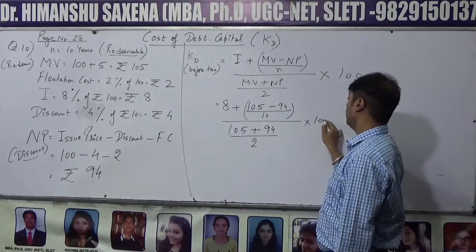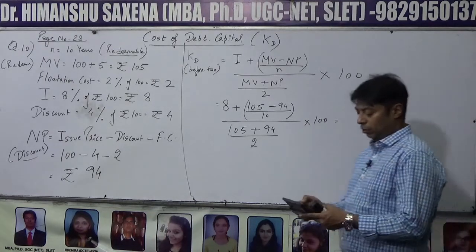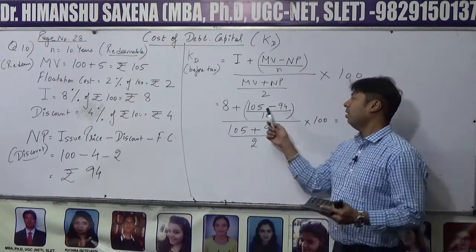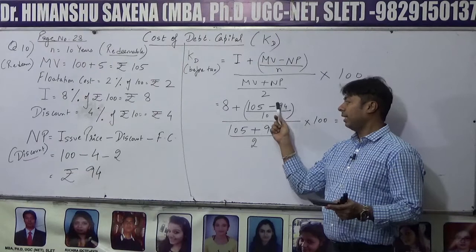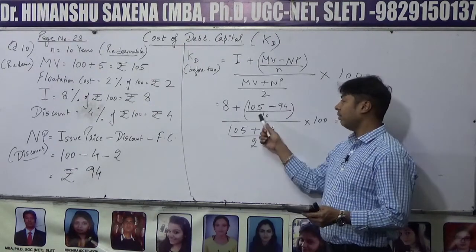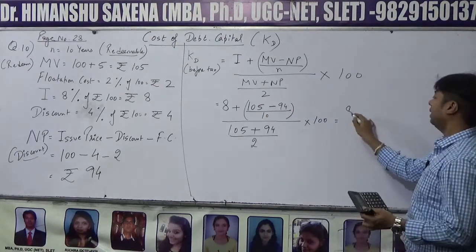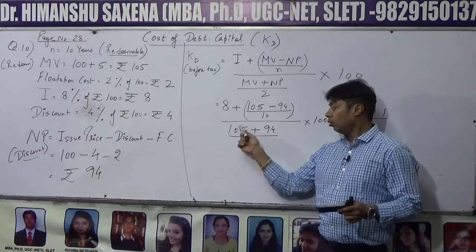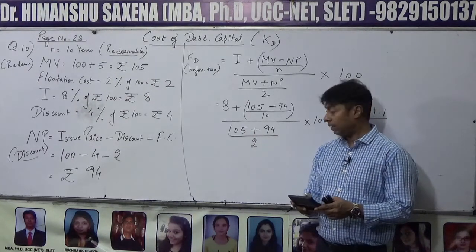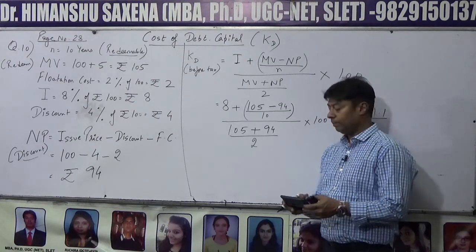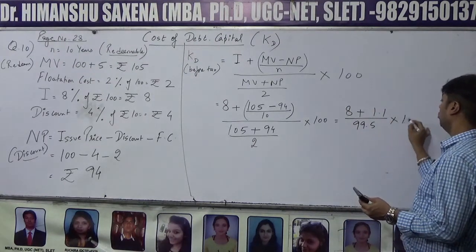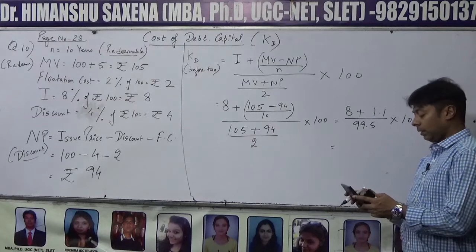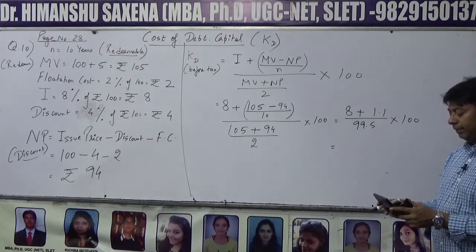Use your calculators: 105 − 94 = 11; 11 ÷ 10 = 1.1. So numerator: 8 + 1.1 = 9.1. Denominator: (105 + 94) ÷ 2 = 199 ÷ 2 = 99.5. So Kd before tax = 9.1 / 99.5 × 100.